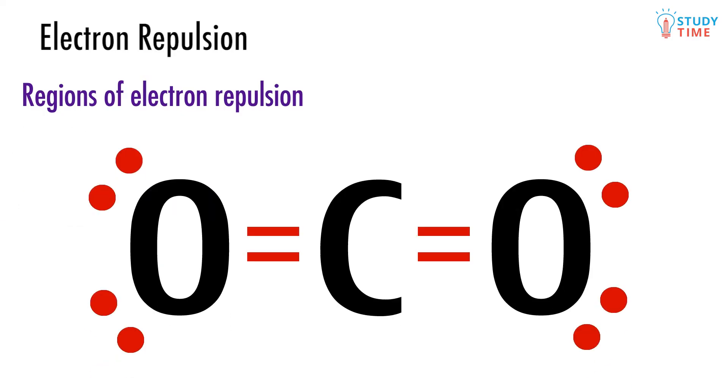For example, take a molecule of carbon dioxide. The only thing you need to worry about, looking at this Lewis diagram, is the number of regions of electron repulsion around the central atom, carbon. As you can see here, it's just two.